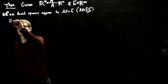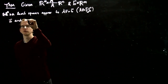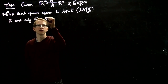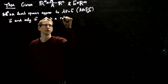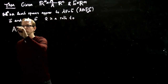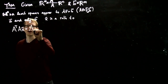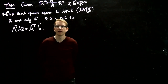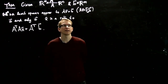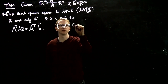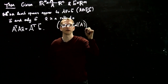This holds if and only if X is a solution to the system A transpose AX equals A transpose B. W equals the column space of A throughout this entire discussion.